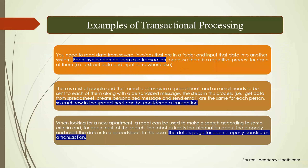Let me give you three examples of transactional processing. First, reading invoices from a folder — each invoice is a transaction. Rather than reading all files at once, you read one by one, so if any invoice fails it won't impact the others. Second, you have a list of email addresses in Excel and you have to send an email to each person — each row in the spreadsheet is a transaction.